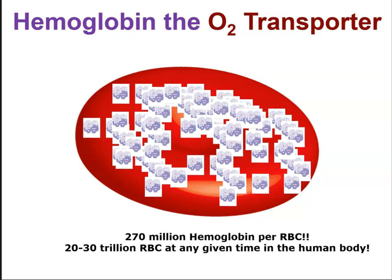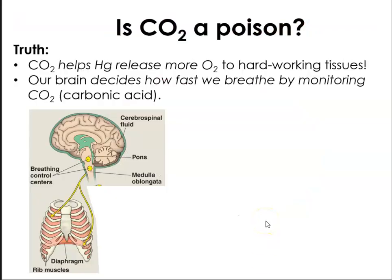There are over 270 million hemoglobin per red blood cell. At any given time in the human body, we have anywhere between 20 to 30 trillion red blood cells, amounting to many molecules of hemoglobin transporting oxygen. Carbon dioxide actually helps hemoglobin release more oxygen to hard-working tissues. Our brain decides how fast we breathe by monitoring carbon dioxide or carbonic acid levels in our blood. If our brain detects high levels of carbonic acid, it tells our respiratory system to breathe harder to release more carbon dioxide and bring in more oxygen. Where there's more carbon dioxide being made, more oxygen is actually being released by hemoglobin, allowing work to continue.